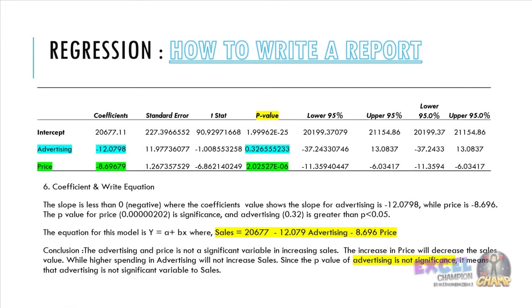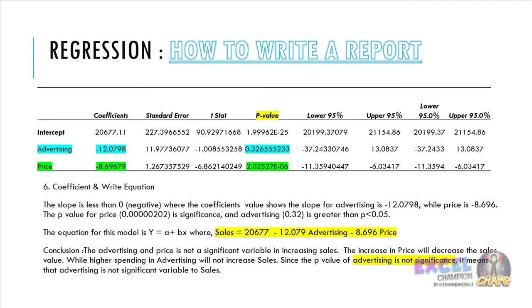In conclusion, advertising and price are not significant variables in increasing sales. This can be seen from the trendline and scatterplot chart, where both show a decreasing trend. The increase in price will decrease sales, while higher spending on advertising will not increase sales. Since the p-value is not significant, advertising has no impact on sales for this model.